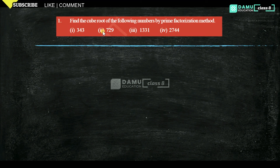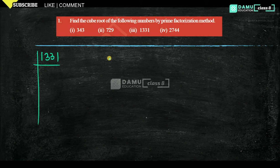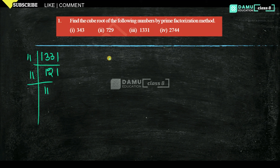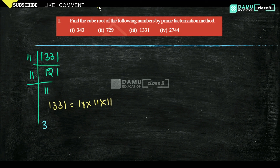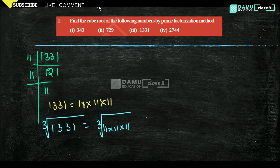Next one is 1331. It will not divide by any number other than 11. So 11 × 121, then 11 × 11. Therefore 1331 = 11 × 11 × 11. Cube root of 1331 = cube root of 11³. The cube root and cube cancel, so cube root of 1331 = 11.